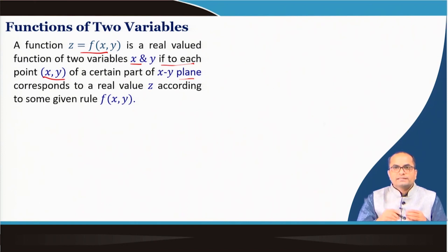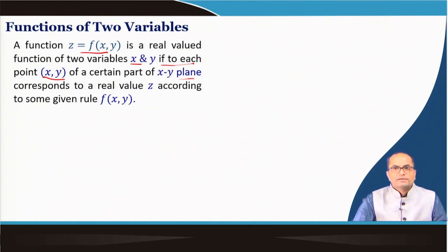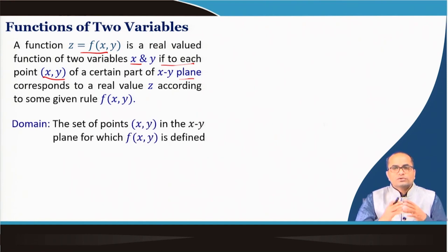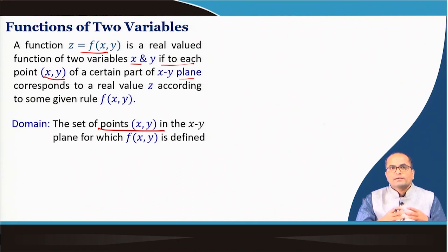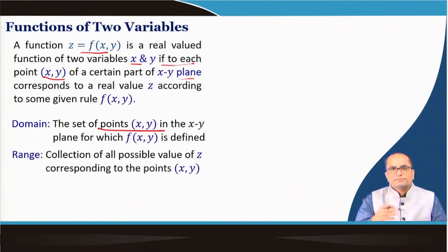Corresponding to each point in the xy-plane we will have a real value denoted by z. There will be a z-axis, and the value z is computed given (x, y) according to rule f. The domain is exactly the set of points (x, y) in the xy-plane for which f is defined, because f must be defined. There might be some points in the xy-plane where f is not defined — those points will not be in the domain.